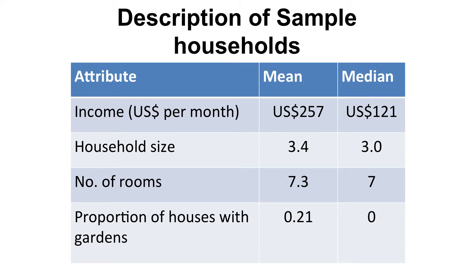Before I present the results of this randomized field experiment, let me tell you a little more about the socioeconomic and demographic characteristics of the sample households. Average household income was about $257 per month. Most households in Jericho had already been through the demographic transition; the average household size was 3.3 persons. The average house had about seven rooms. Twenty-one percent of the sample households had a garden; however, household water use for households with and without a garden was almost the same.